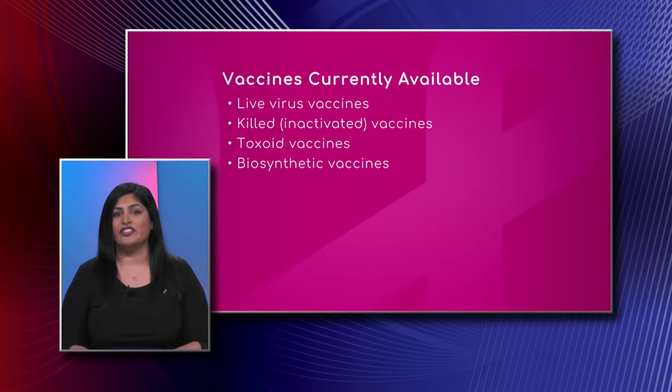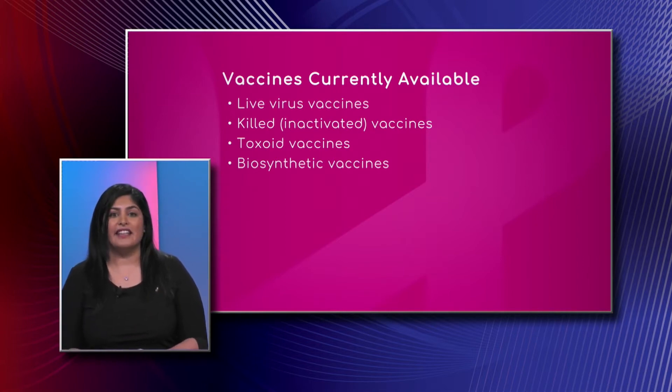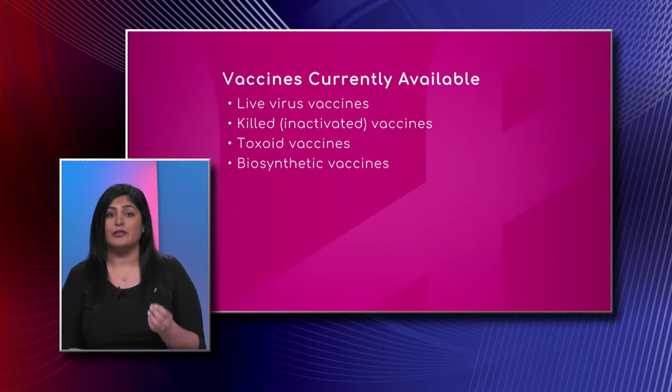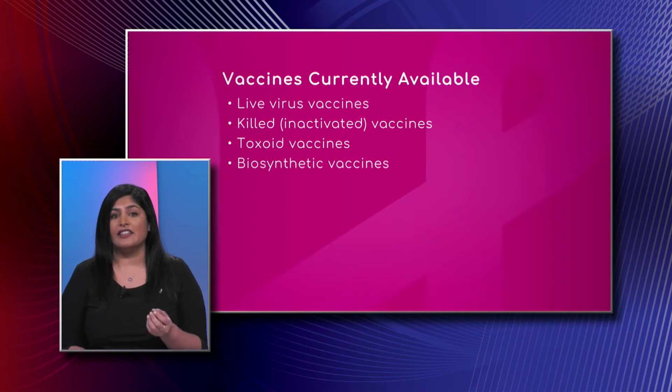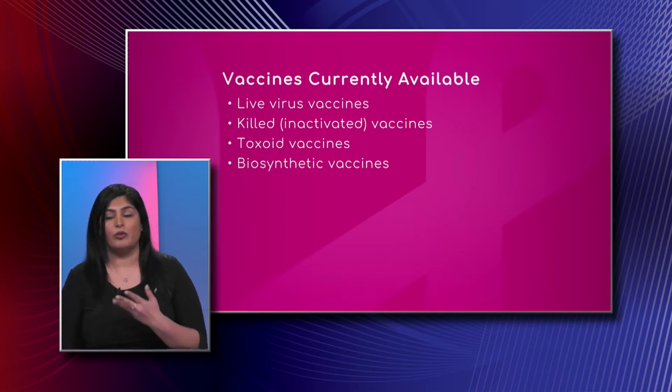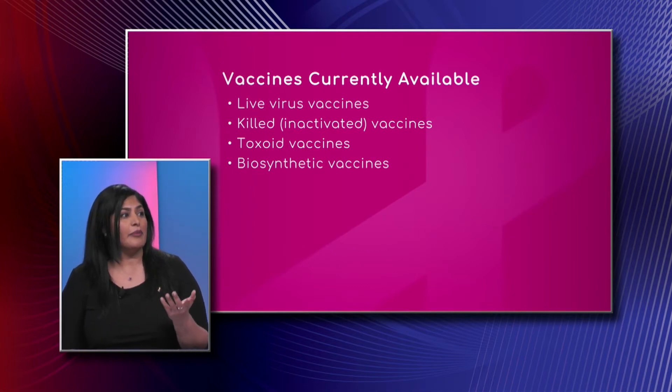Toxoid vaccines are another type of vaccine where basically it's not actually the germ but a toxin or a chemical that the germ makes that makes people ill. A good example of that is the tetanus vaccine, which we'll be talking about more later. And finally, a biosynthetic vaccine is the fourth type — it's a man-made vaccine that creates substances resembling infectious diseases to protect our body, triggering our body to make antibodies. The hepatitis B vaccine is an example of that.